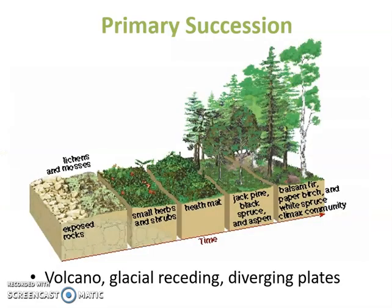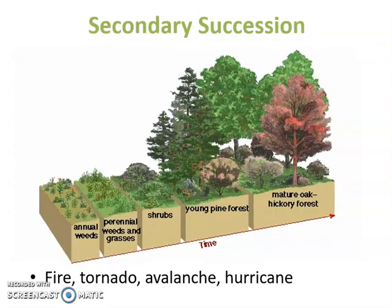Primary succession starts from zero — examples include volcanic eruptions, glacial recession, and tectonic plates parting where there was no life or soil before. It takes a really long time to establish soil. Secondary succession is much more common — we see this with disturbances and natural disasters where soil is already present and there's some seed bank, but the area is essentially starting over from the ground up.